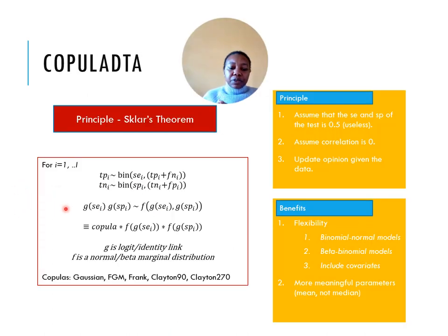Using Sklar's theorem, we will write the bivariate distribution of sensitivity and specificity as a product of a copula and the corresponding marginal distribution. The resulting models are binomial normal model or beta binomial model depending on the link function that you take and the marginal distribution that you specify.